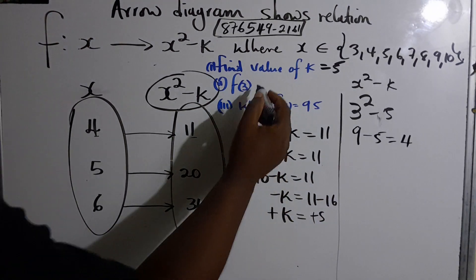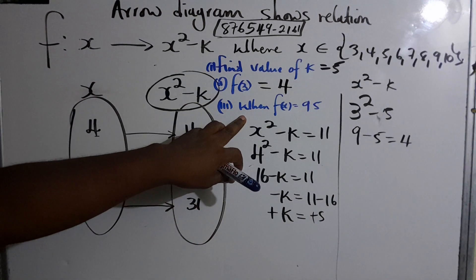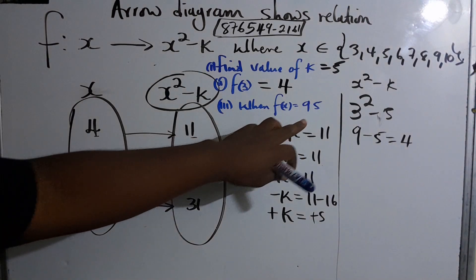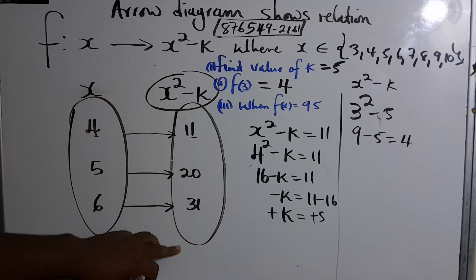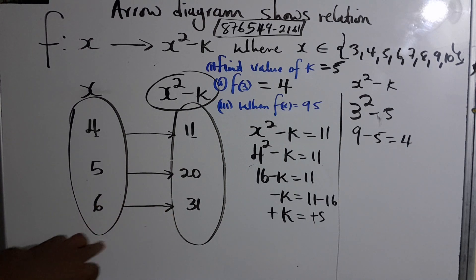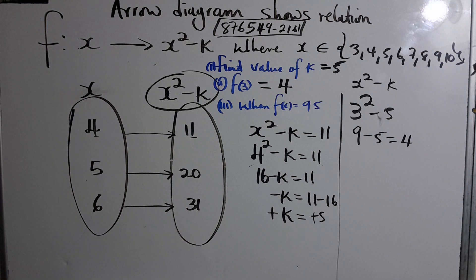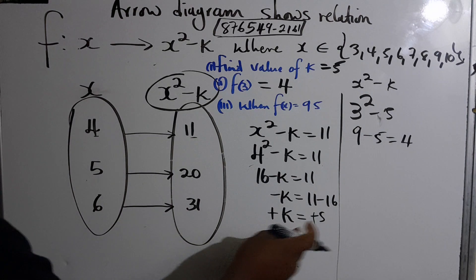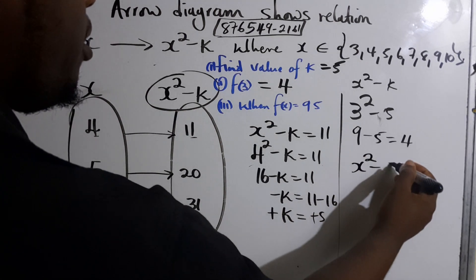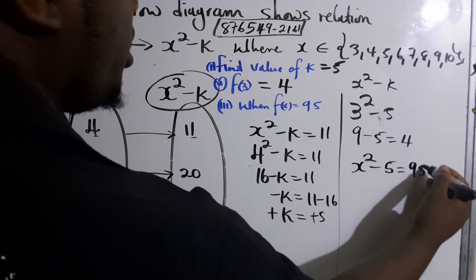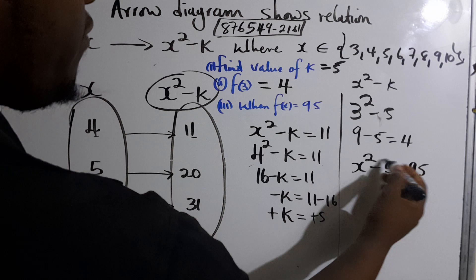Now when f(x) = 95, f(x) would be this, so they want us to equate it and find which number would be here when we're supposed to get 95. That's easy because you know the value of k. We don't know x this time, we're searching for x. So x² - 5 = 95. We add 5 to both sides.